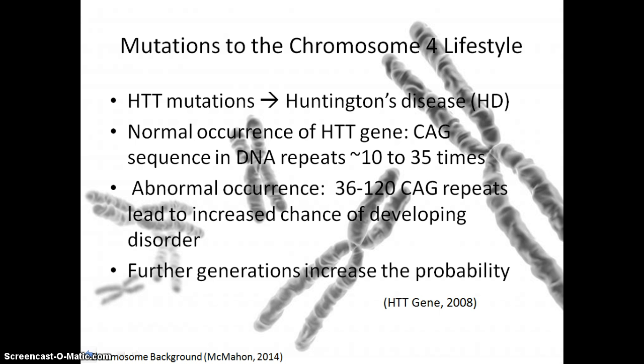HTT mutations lead to Huntington's disease. In a normal occurrence of HTT, the CAG DNA base sequence repeats 10 to 35 times, but abnormally it occurs 36 to over 120 times, leading to an increased chance of developing the disorder. Further generations increase the probability of inheriting Huntington's disease.